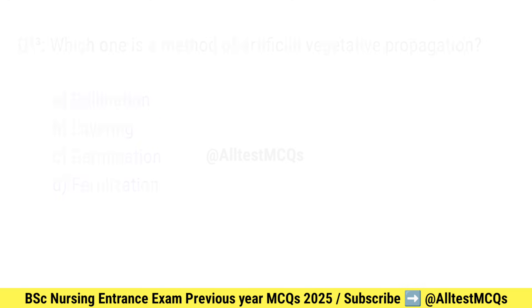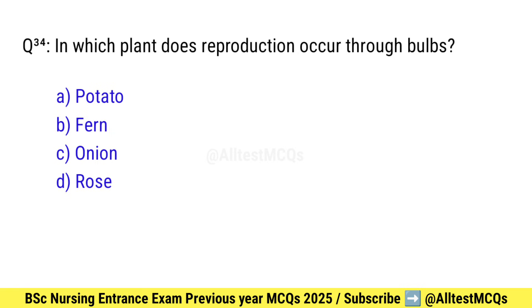Question number 34. In which plant does reproduction occur through bulbs? Right option is C: Onion.